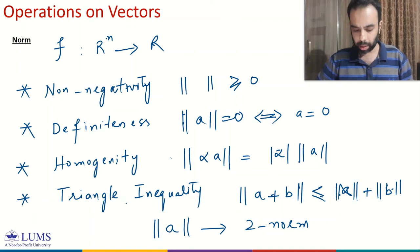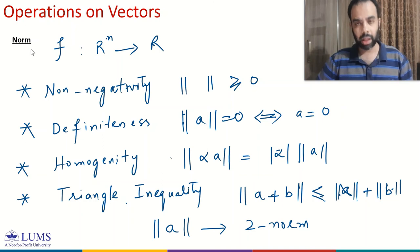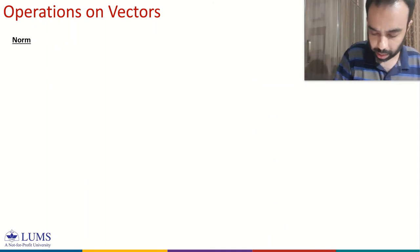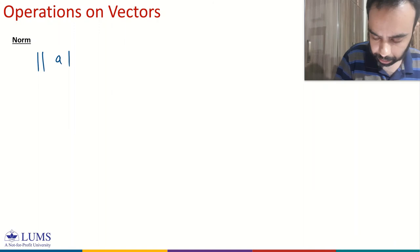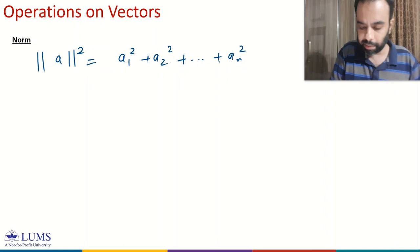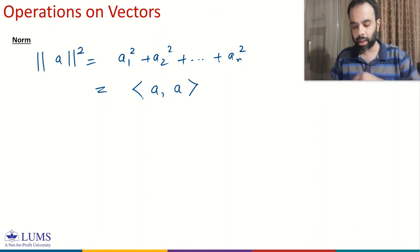Let's also quickly discuss the relationship between norm and inner product. The squared norm of vector a equals a1 squared plus a2 squared plus ... plus an squared, which is in fact the inner product of the vector with itself. This was discussed in the previous module.